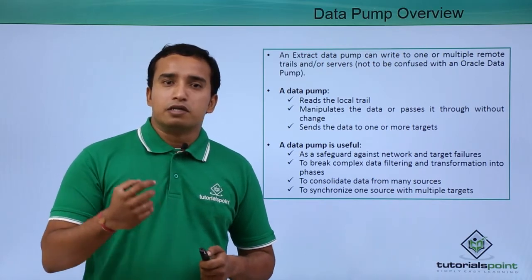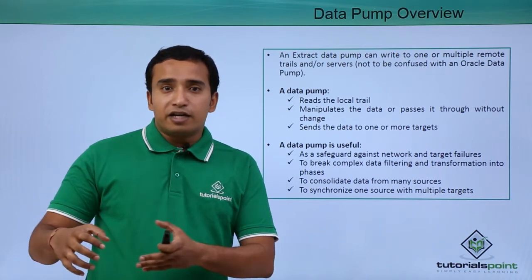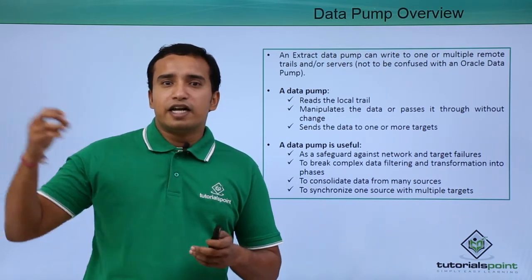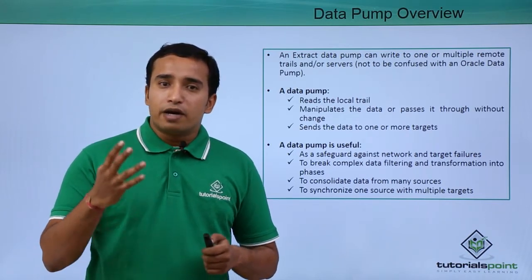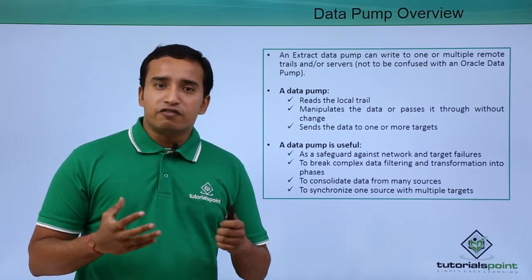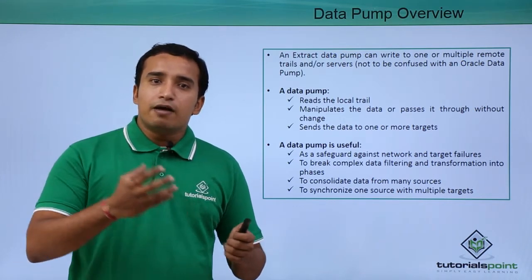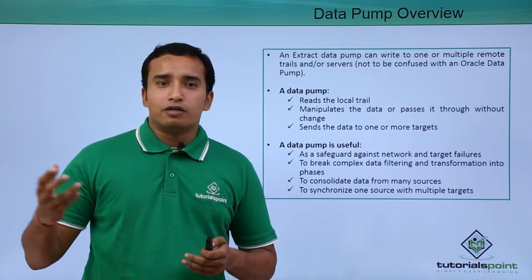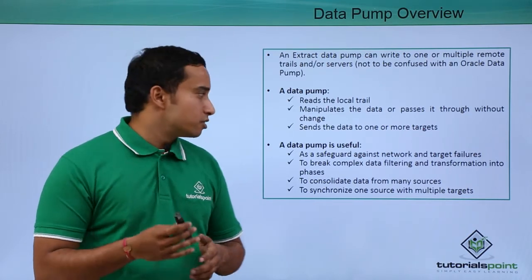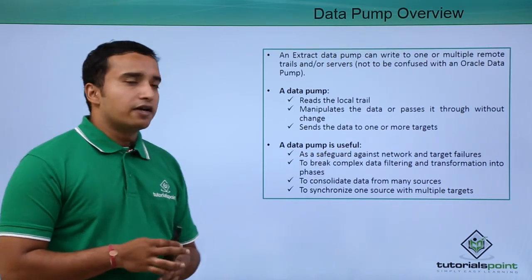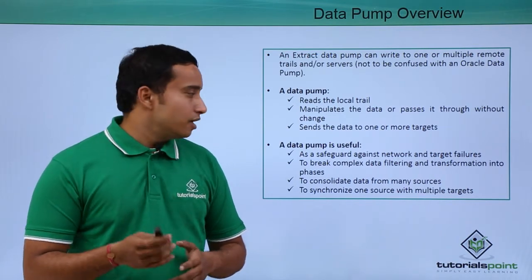If you do not have a data pump process, what happens? The primary extract extracts the data without putting it into a trail file — it directly sends the data over the network to the target site. That is also possible, but in that case, what happens if there is any network failure? The data may not be propagated properly. So the purpose of having the trail files and the data pump process is to protect against network and target failures so that your data is safeguarded in the trail files.